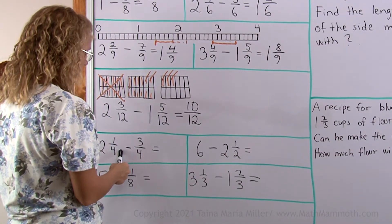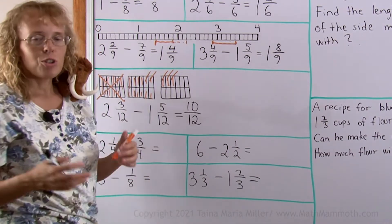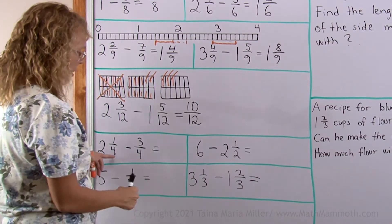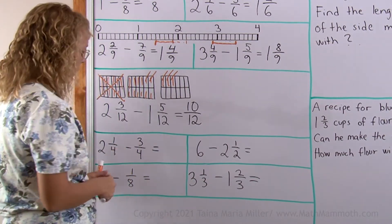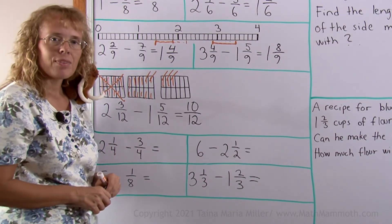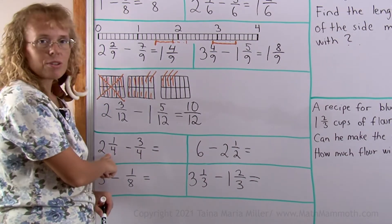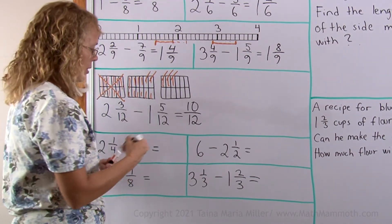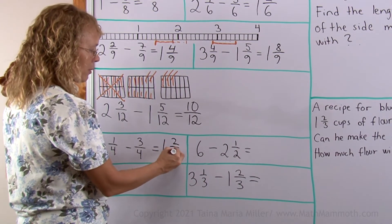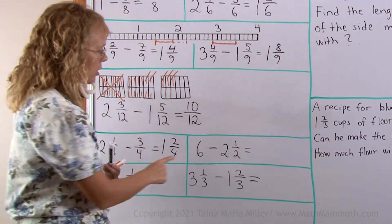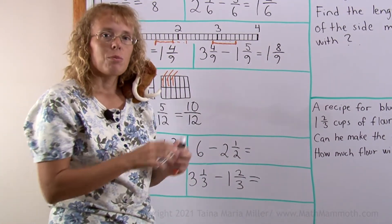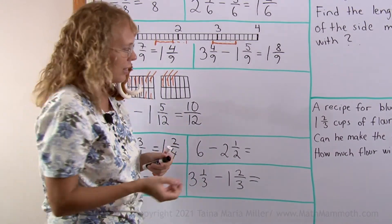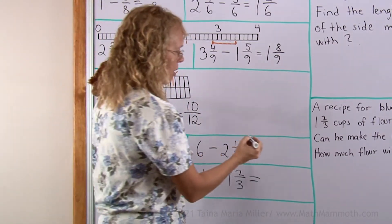2 and 1 fourth take away 3 fourths. If you don't see the pies in your mind, then draw — by all means draw 2 whole pies, and then the third pie, and in the third pie colour in 1 fourth. Then you take away 3 fourths: take away the 1 fourth first, and then from your second whole pie take 2 fourths. So you are left with 1 whole pie and 2 fourths. Or: 6 whole pies take away 2 and a half — take away 2 pies, leaving 4 pies, then take away half a pie, and you are left with 3 and a half.